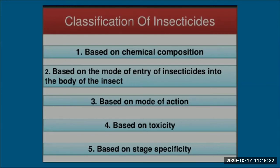Insecticides are classified based on: chemical composition; mode of entry into the body of the insect; mode of action; toxicity (how poisonous it is and at what level it kills pests); and stage specificity, meaning at what stage of plant growth the insecticide should be applied.